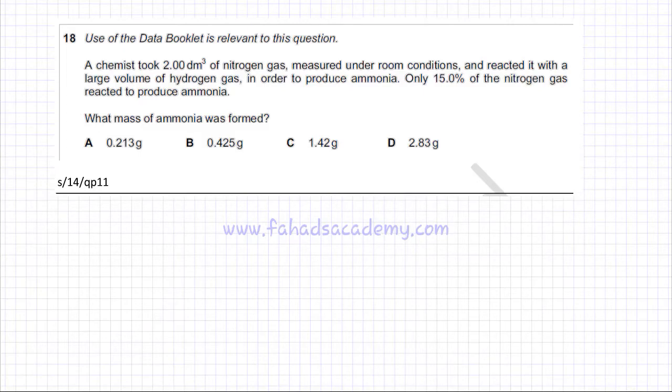In the following question, a chemist took 2 dm³ of nitrogen gas measured under room conditions and reacted it with a large volume of hydrogen gas in order to produce ammonia.